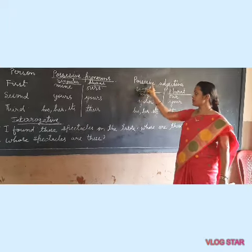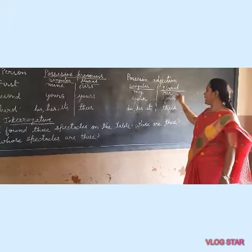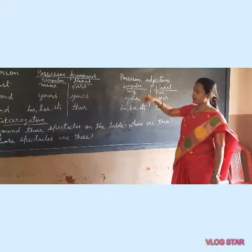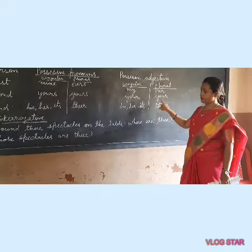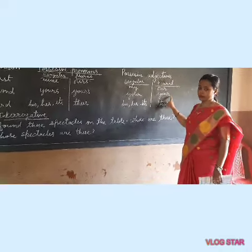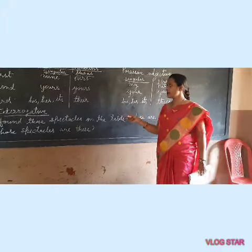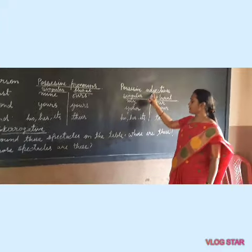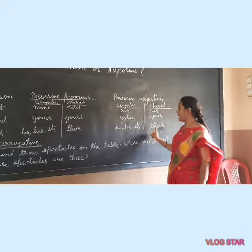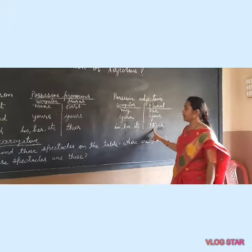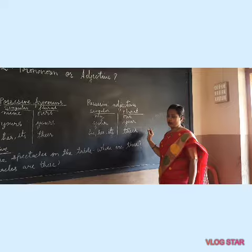Second person singular number we use 'your', and second person plural number we also use 'your' — it remains the same in both numbers. Now in third person, the possessive adjective is 'his', 'her', 'its', and in plural number it becomes 'their'.